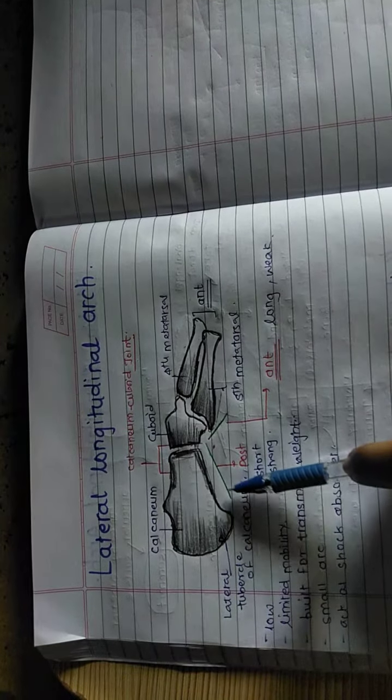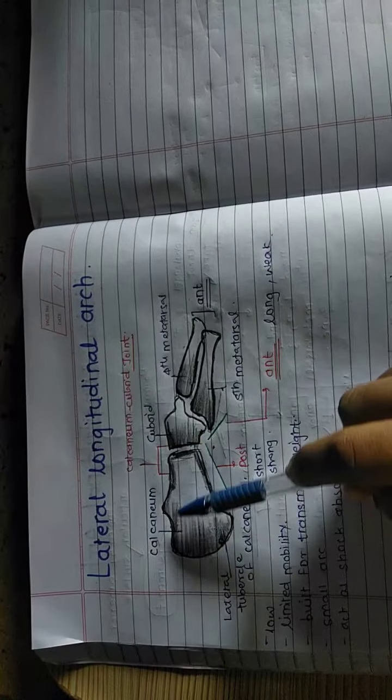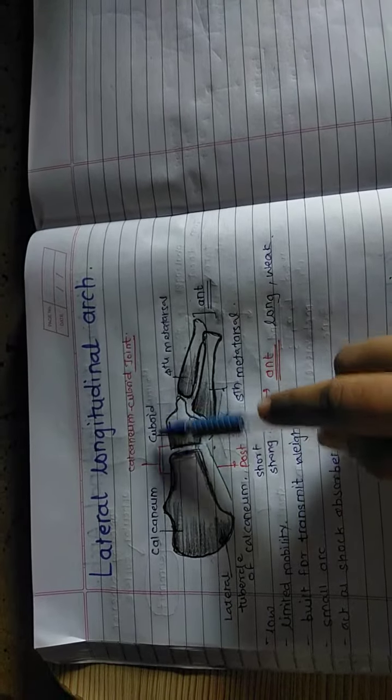The joint involved in forming the lateral longitudinal arch is the calcaneum cuboidal joint.